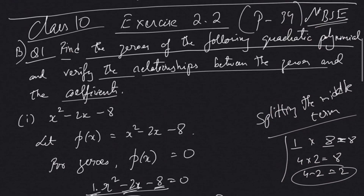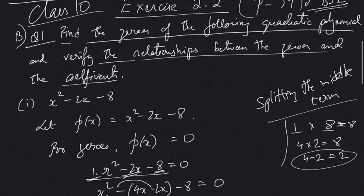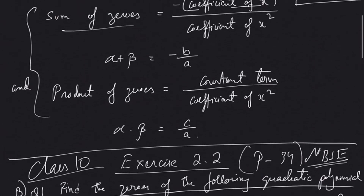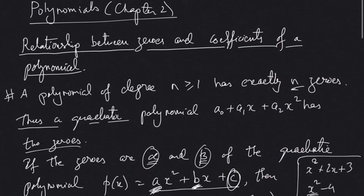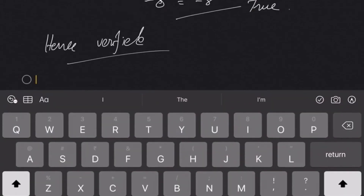So that is how we do this question: first find the zeros, then verify the relationship between the zeros and the coefficients. In the next video we'll be doing some more questions on Exercise 2.2. Thank you.